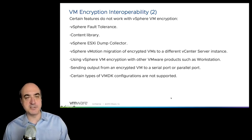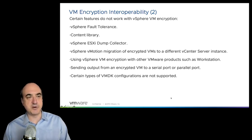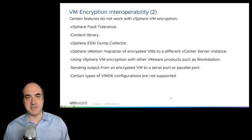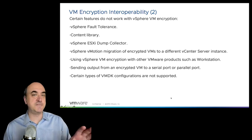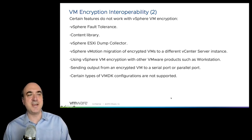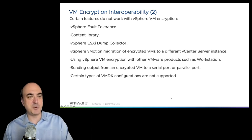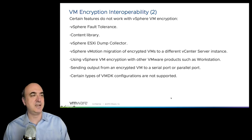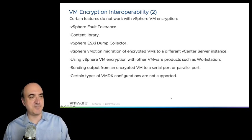A few of these limitations are vSphere 6.7 issues. For instance, content library could not have an encrypted VM, and vMotion migration of encrypted VMs to a different vCenter server instance was not supported. Those have both been lifted — those are new features in vSphere 7. Content library for VM encryption as well as vMotion across vCenter server instances are now supported.